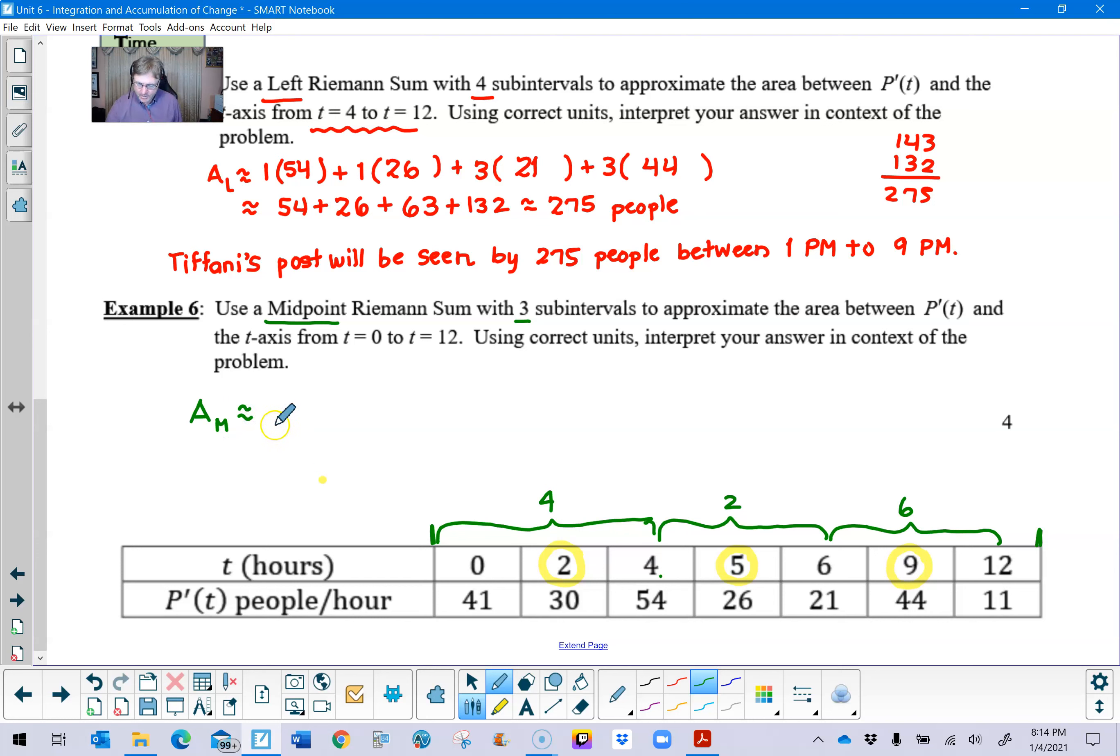So area subscript m, we're going to take our 4, multiply it by some height, add 2, multiply it by some height, add 6 multiplied by some height, and now to figure out what the heights are going to be. You guessed it, it is going to be the p prime value that corresponds to these circled t values. So 30, 26, and 44. You're just looking for the value that's smack dab in the middle. So we have those three numbers respectively, and then the rest of this is pretty much just arithmetic work. 4 times 30 is 120, 2 times 26 is 52, 44 times 6 might be a little bit tricky. I think you get 264 out of that, and if we do this addition we'll get 436. Pretty sure about that arithmetic there.